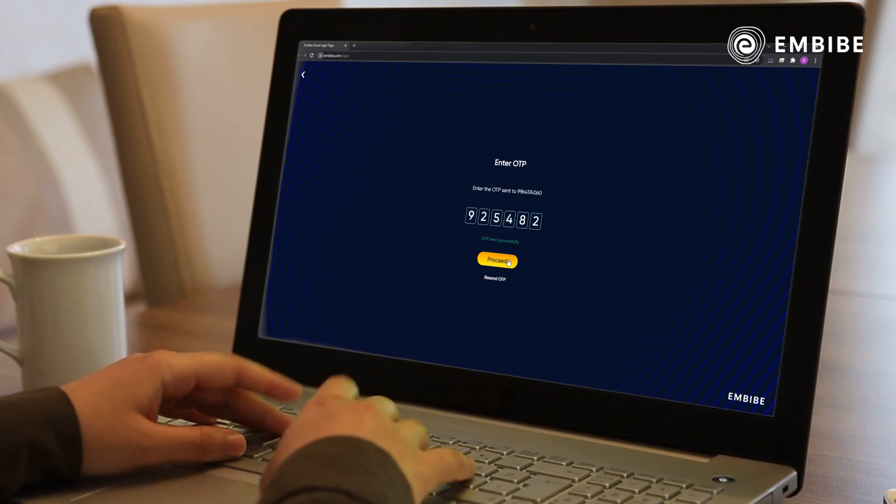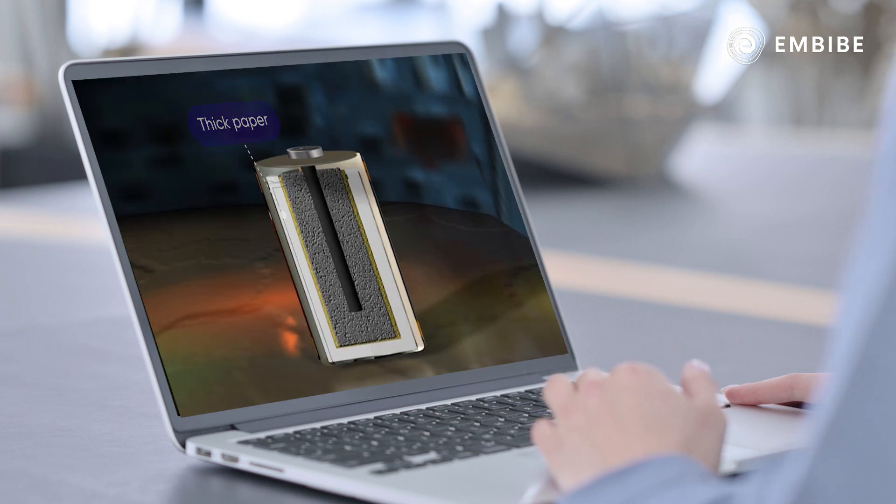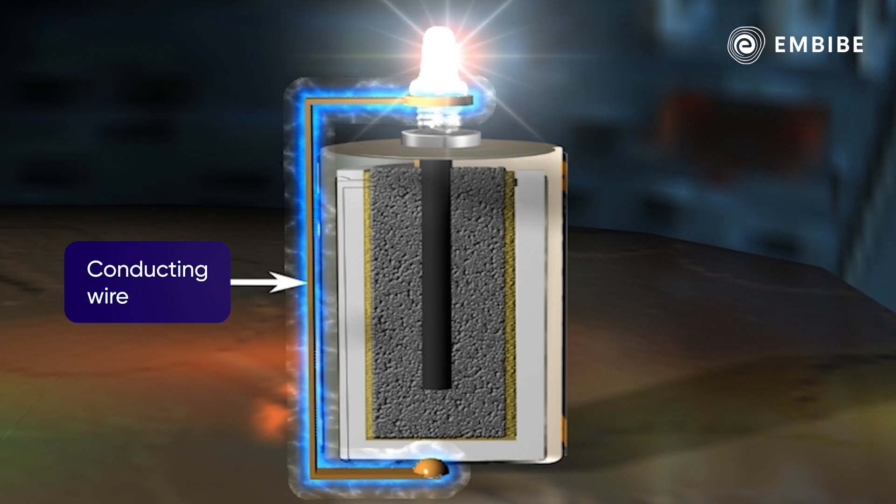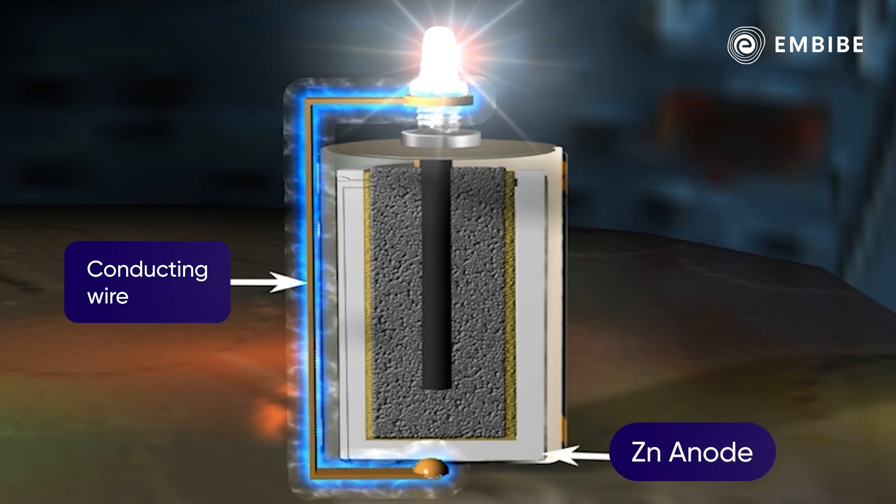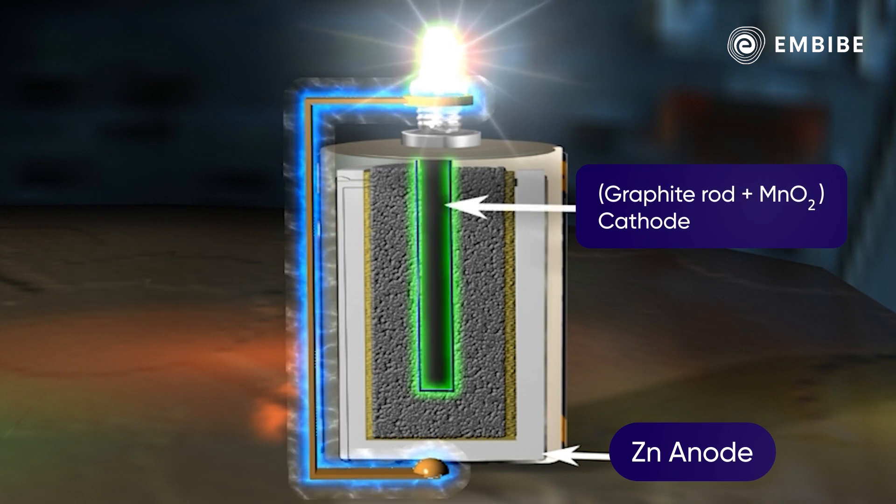To discover more, log on to embibe.com and learn the electrochemistry behind it. When the cylinder and the graphite rod are connected by a conducting wire, zinc acts as an anode and the graphite rod which is in contact with MnO2 acts as a cathode.